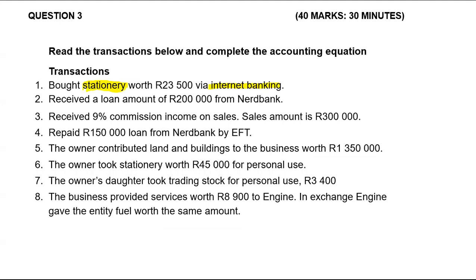Transaction two: we received a loan. Note that we are receiving, not paying. We received a loan amount of 200,000 from Netbank. When we receive the loan it means we are receiving money — more money is going into our bank account, a cash inflow of 200,000. But that is a loan, which means we are going to owe Netbank that amount because they are loaning us the money. Therefore liabilities are affected.